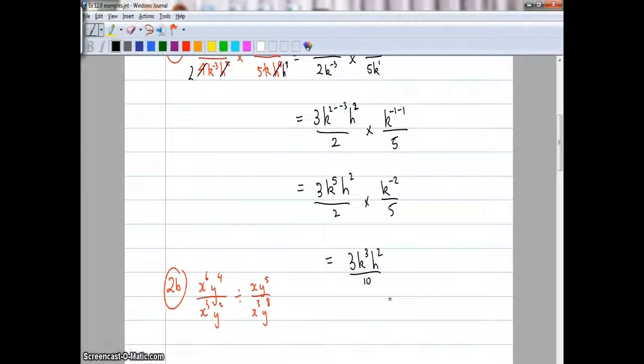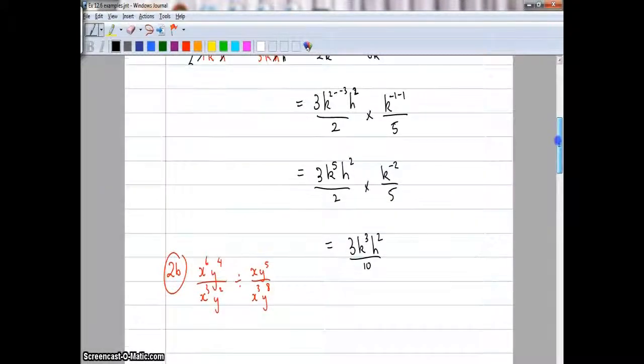There might be other variations on that answer, but that's certainly one of those answers, depending on which way you did it. If you didn't have positive indices you might have got a slightly different answer, but that's okay nonetheless.